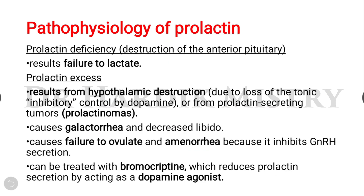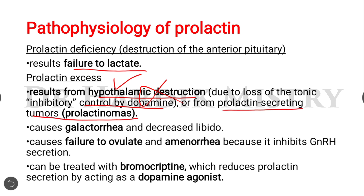Pathophysiology of prolactin: prolactin deficiency is due to destruction of anterior pituitary lactotroph cells and results in failure to lactate. Excess prolactin results from hypothalamic destruction due to loss of tonic inhibitory control by dopamine, or from prolactin-secretory tumors called prolactinomas. Increased prolactin concentration causes galactorrhea and decreased libido — meaning decreased sexual desire.